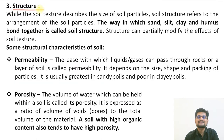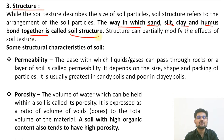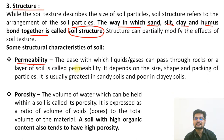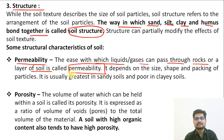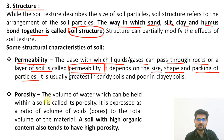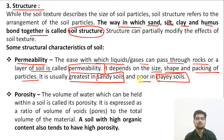The third important characteristic is structure — the way in which sand, silt, clay, and humus are bonded together. An important aspect of soil structure is permeability — the permission it gives to liquids or gases to penetrate through it. It is the ease at which liquids and gases can pass through rocks or a layer of soil. Permeability depends upon the size, shape, and packing of the particles. It is usually greatest in sandy soil and very poor in clay soil.